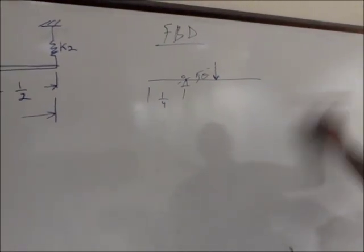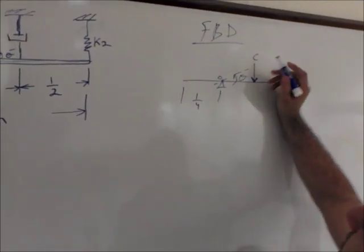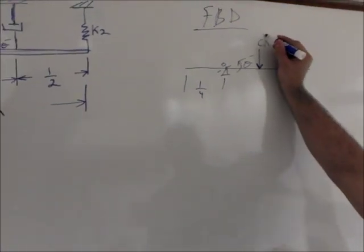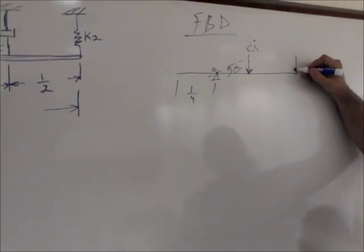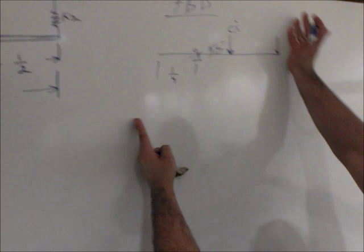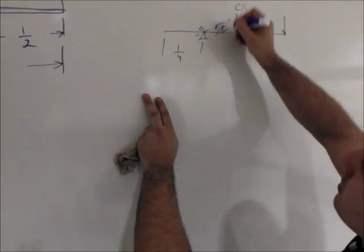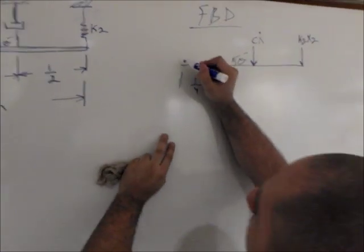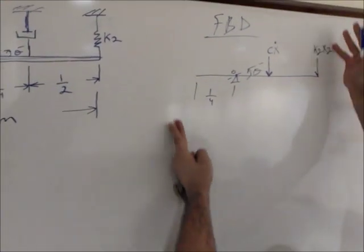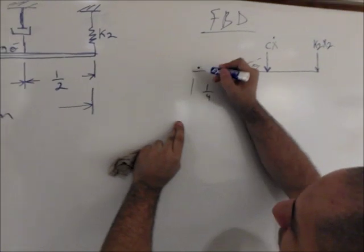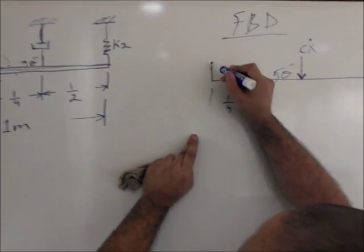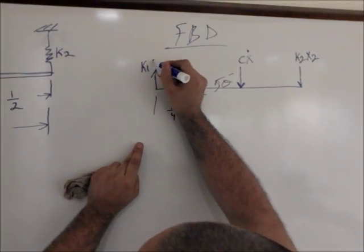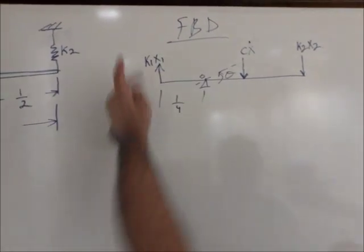Continuing the free body diagram — we have C times X-dot for the damping force. Since the rod is going counterclockwise, the spring k2 produces a force k2·X2 opposing the motion, pointing downward. The spring k1 on the other side produces a force k1·X1 pointing upward, opposing the rotation.